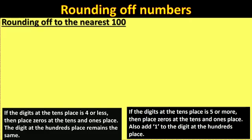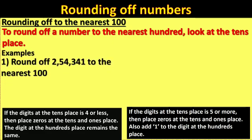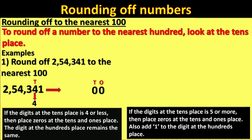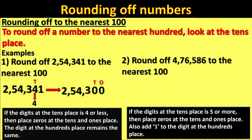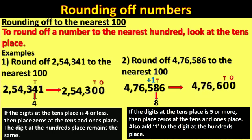To round numbers to the nearest 100, we look at the tens place. In the given number 2,54,341, 4 is in the tens place and it is less than 5, so place 0 at the tens and ones place; the digit at the hundreds place, 3, remains the same. Therefore, the rounded value is 2,54,300. In 4,76,586, 8 is in the tens place and 8 is greater than 5, so place 0 at tens and ones place and add 1 to the hundreds place: 5 plus 1 equals 600. The rounded value is 4,76,600.